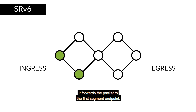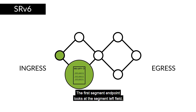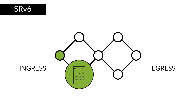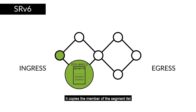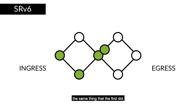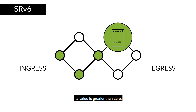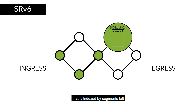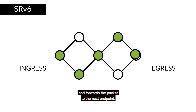It forwards the packet to the first segment endpoint. The first segment endpoint looks at the segments left field. Its value is greater than zero, so it hasn't reached its destination yet. It copies the member of the segment list indexed by segments left to the IPv6 destination address, then forwards the packet. The packet arrives at the second segment egress node, which does exactly the same thing: it looks at the segments left field, its value is greater than zero, so it copies the indexed segment list member to the IPv6 destination address and forwards the packet to the next endpoint.